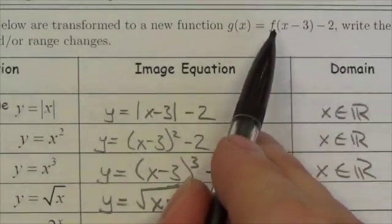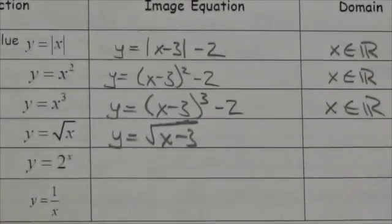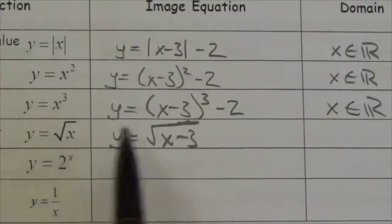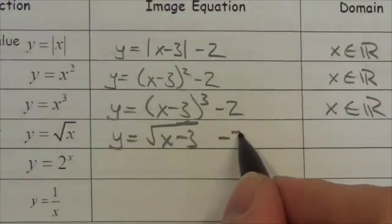The subtract 2 occurs outside the function. So now my function here is just root x, so outside the root x, I'm going to subtract 2.